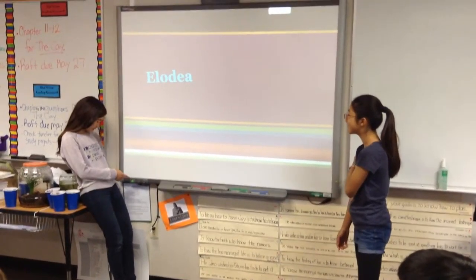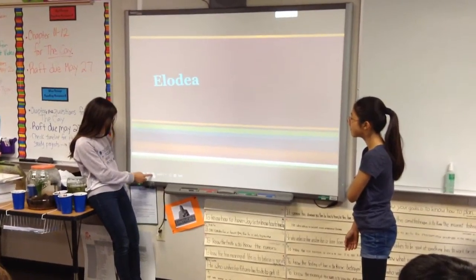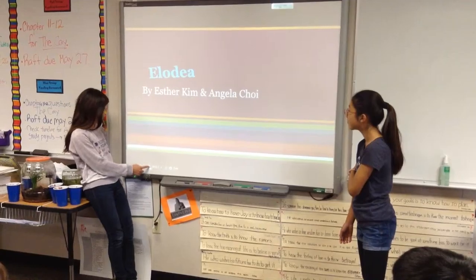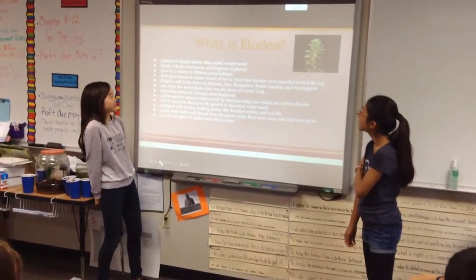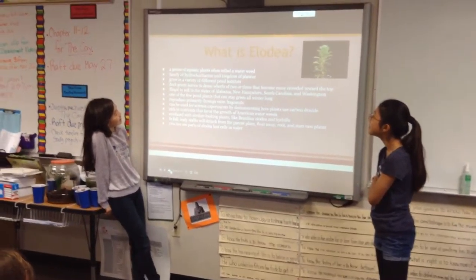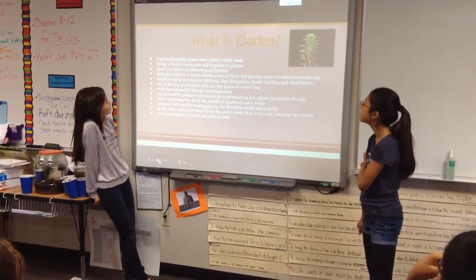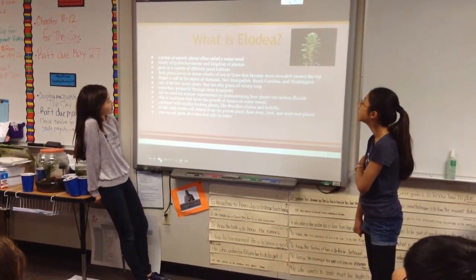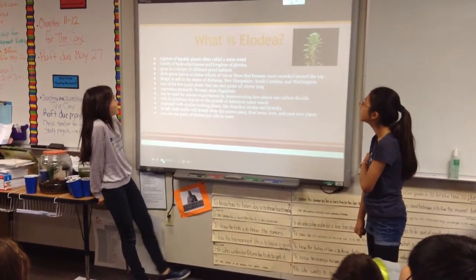Our presentation is about Elodia. Elodia is a genus of aquatic plants often called a water reed. It is in the family Hydrocharitaceae and the Kingdom Plantae.